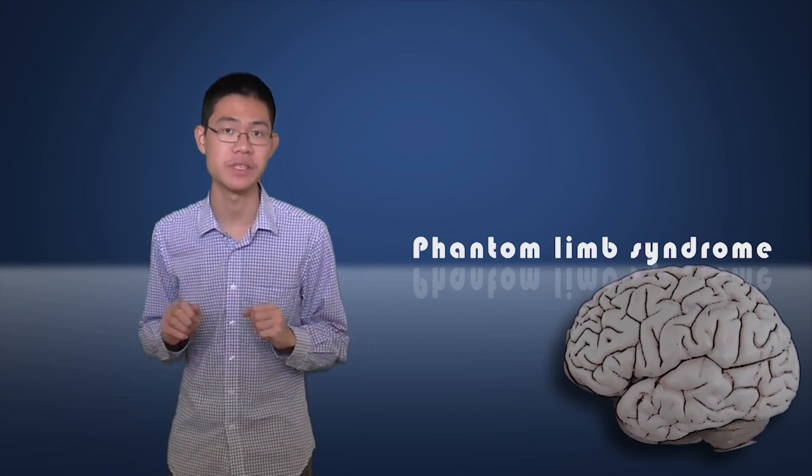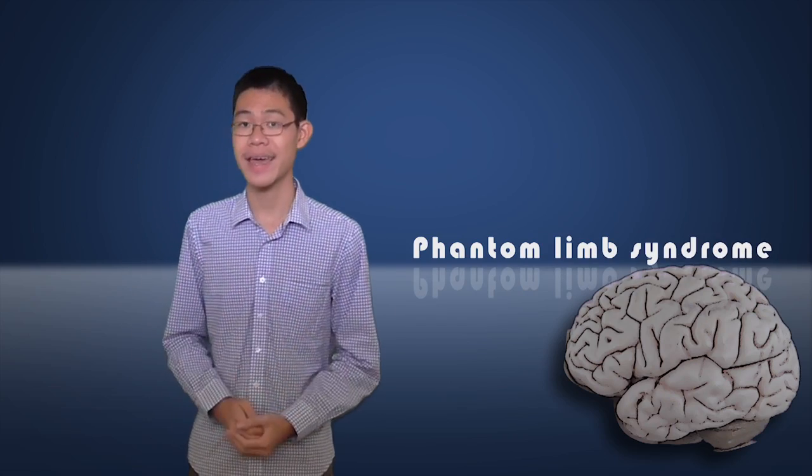Way back in 1871, phantom limb syndrome is a very common condition that even affects amputees today, in which they feel that a missing limb is somehow still attached to their body. So the big question is, how do these ghostly sensations even occur?